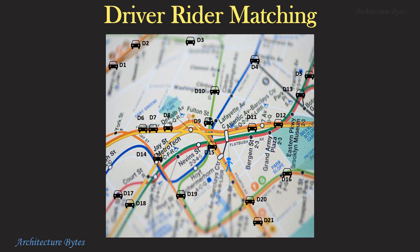To search for drivers closest to the potential rider, Uber would have to scan the entire geographical area and examine every single driver's location. That is clearly not efficient. The search area is way too big. A way must be found to narrow that down.